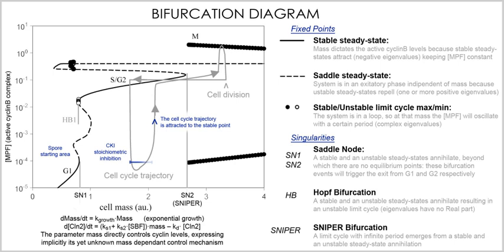Ronald Fisher made fundamental advances in statistics, such as analysis of variance, via his work on quantitative genetics. Another important branch of population genetics that led to the extensive development of coalescent theory is phylogenetics. Phylogenetics is an area that deals with the reconstruction and analysis of phylogenetic trees and networks based on inherited characteristics. Traditional population genetic models deal with alleles and genotypes, and are frequently stochastic. Many population genetics models assume that population sizes are constant.